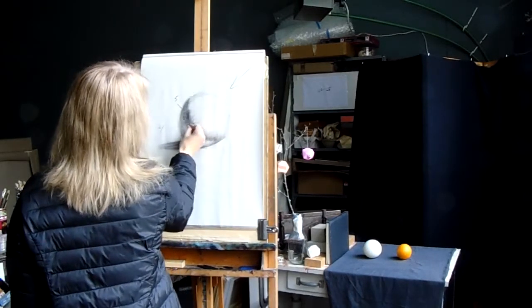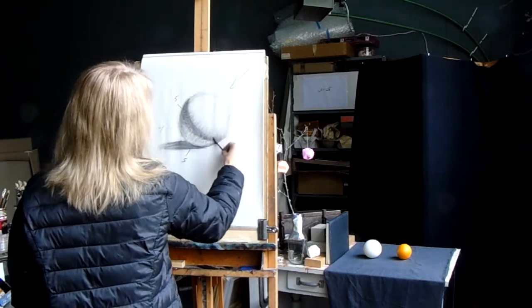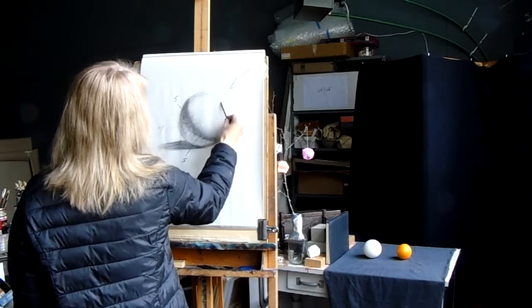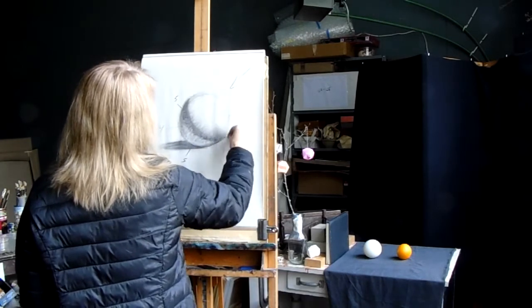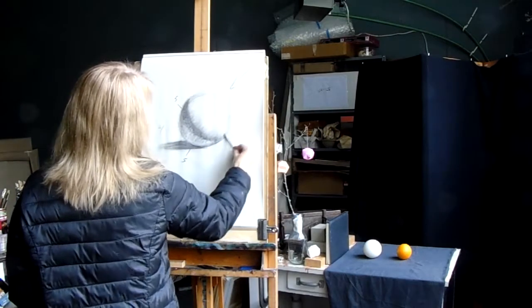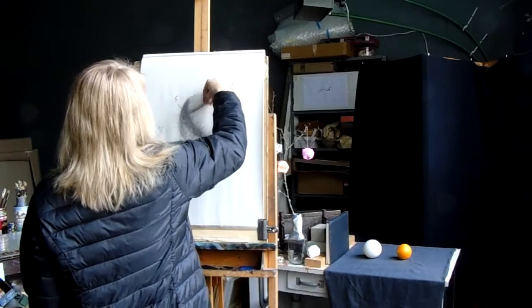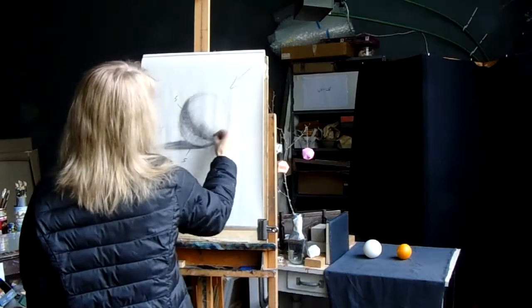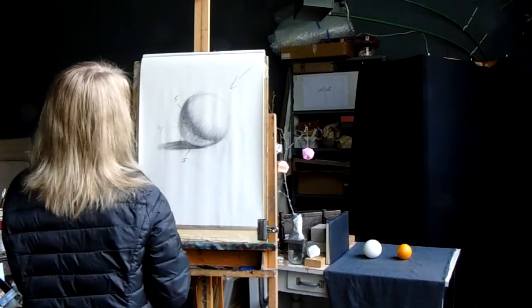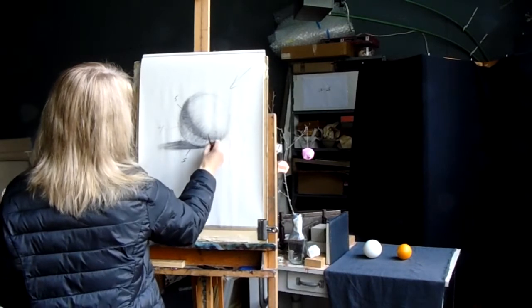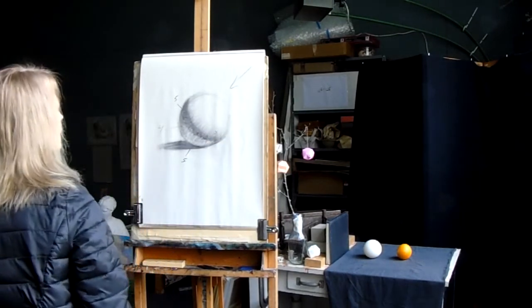And this is called the mid-tone area. This is the mid-tone of my value for my object. And there's going to be a transition, just a teeny bit of 4, value 4. And then we're going to go into value 3. 4, 5.